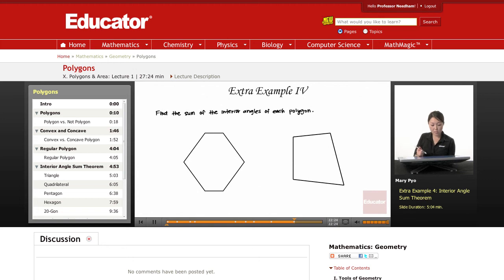For example, find the sum of the interior angles of each polygon. Notice how both these polygons are not regular polygons—it doesn't look like they're equilateral or equiangular—but it's okay because we're just looking for the sum of all the interior angles.